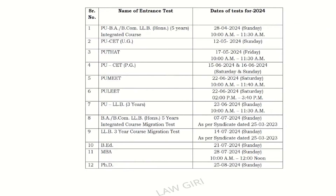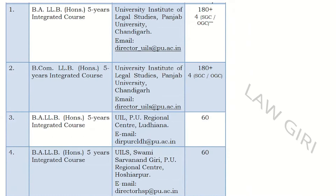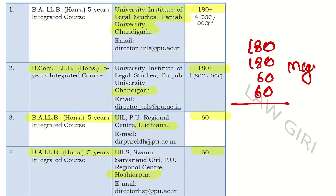The exam date is April 28th, 10am to 11:30am. There is no application form open at the time of making this video. Looking at the number of seats: University Institute of Legal Studies, Punjab University Chandigarh has 180 plus seats, plus 4 for girls. BCOM LLB is 180 in Chandigarh. In Ludhiana, their center has 60 seats but only BLLB — BCOM LLB is not available there. In Hoshiarpur there are 60 LLB seats. These seats total around 480. There is also a migration exam, so if you get Ludhiana or Hoshiarpur, you can migrate to Chandigarh with a good score.